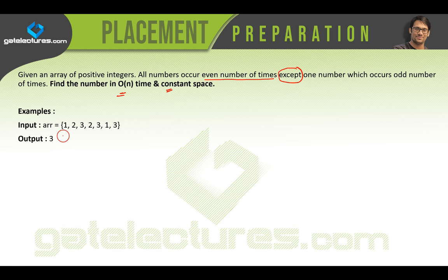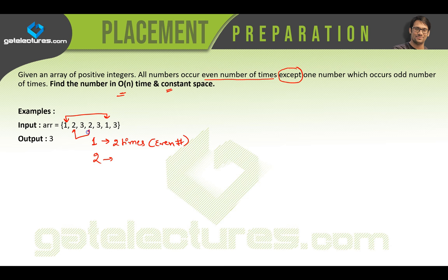Let's look at an example array with numbers 1, 2, and 3. The number 1 is occurring twice, which is an even number of times. The number 2 is also occurring an even number of times. Then we have the number 3 which is occurring here, here, and here — so it is occurring an odd number of times. We need to find the number which occurs an odd number of times. This is exactly the problem.